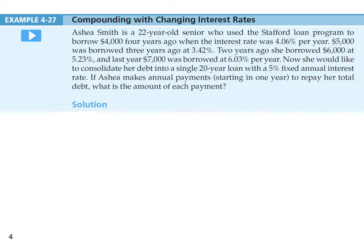There's another example. Shaya Simit is a 22-year-old senior who used the Stafford loan program to borrow: $4,000 four years ago at 4.06% per year, $5,000 three years ago at 3.42%, $2,000 two years ago at 5.23%, $6,000 one year ago, and $7,000 with another rate. She would like to consolidate her debt into a single 20-year loan at 5% fixed annual interest. What is the amount of each annual payment starting in one year?